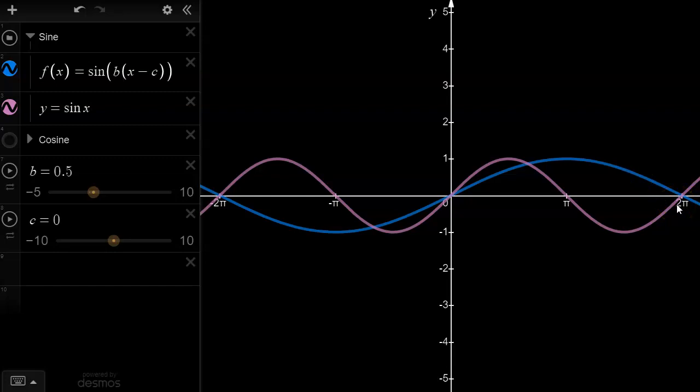So the b value does have meaning. It really tells us how many cycles of the graph can fit in an interval of length 2pi.